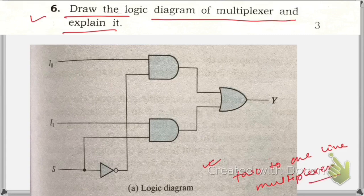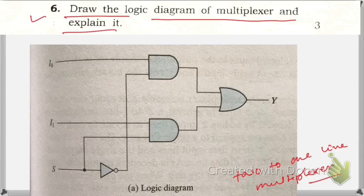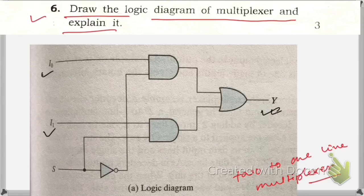Since the question doesn't specify what kind of multiplexer, we can draw a two-to-one line or four-to-one line. For simplicity, I've taken a two-to-one line multiplexer. This circuit has two data input lines I₀ and I₁, one output line, and a selection line S. When S is equal to 0, the upper AND gate is enabled and I₀ has a path to the output.